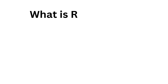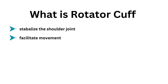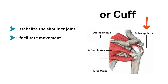The rotator cuff is a group of muscles and tendons in the shoulder that work together to stabilize the shoulder joint and facilitate movement. The rotator cuff muscles include the supraspinatus, infraspinatus, teres minor, and subscapularis.